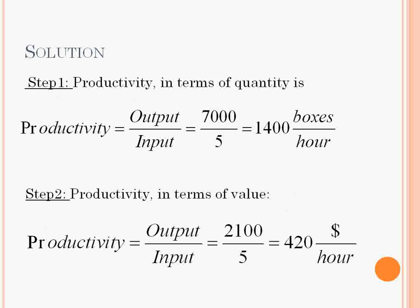Now we can calculate productivity both in terms of quantity and value. We have to divide output by input in both cases. In the first case, 7000 divided by 5 makes 1,400 boxes per hour. In terms of value, it means $420 per hour, which can be calculated as $2,100 divided by 5.